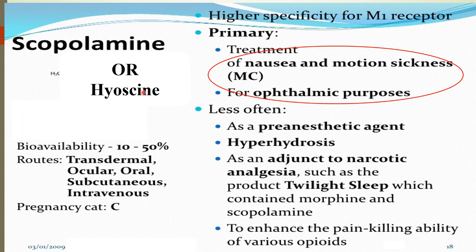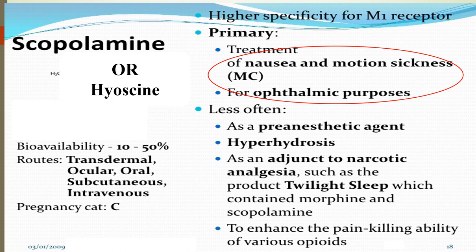Scopolamine (hyoscine) is a natural compound. Routes of administration are transdermal, ocular, oral, subcutaneous, and intravenous. It is contraindicated in pregnancy. It is highly specific to M1 receptors and is used for treatment of nausea and motion sickness, for ophthalmic purposes, and less often as a pre-anesthetic agent and adjuvant to narcotic analgesics — such as in the 'twilight sleep' product containing morphine and scopolamine to enhance the pain-killing ability of opioid substances.